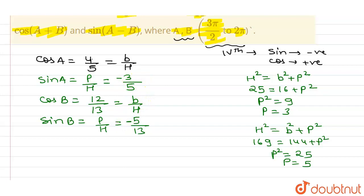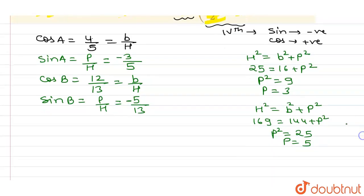And we have to find cos(A+B), so I can write here cos(A+B) equals cos A cos B minus sin A sin B.